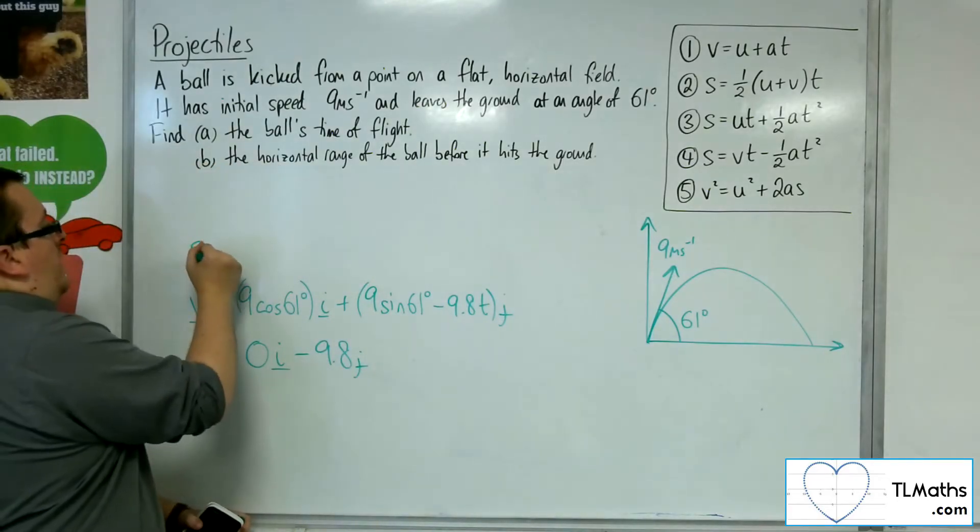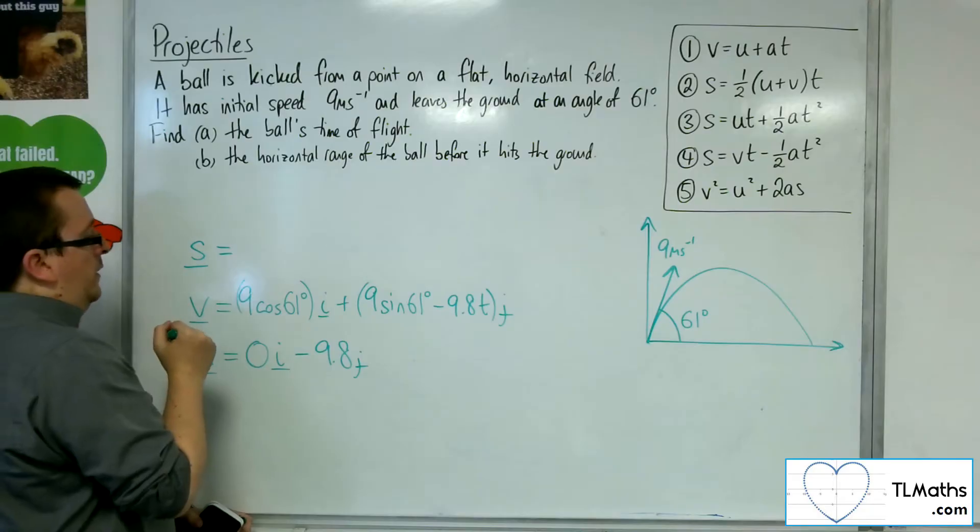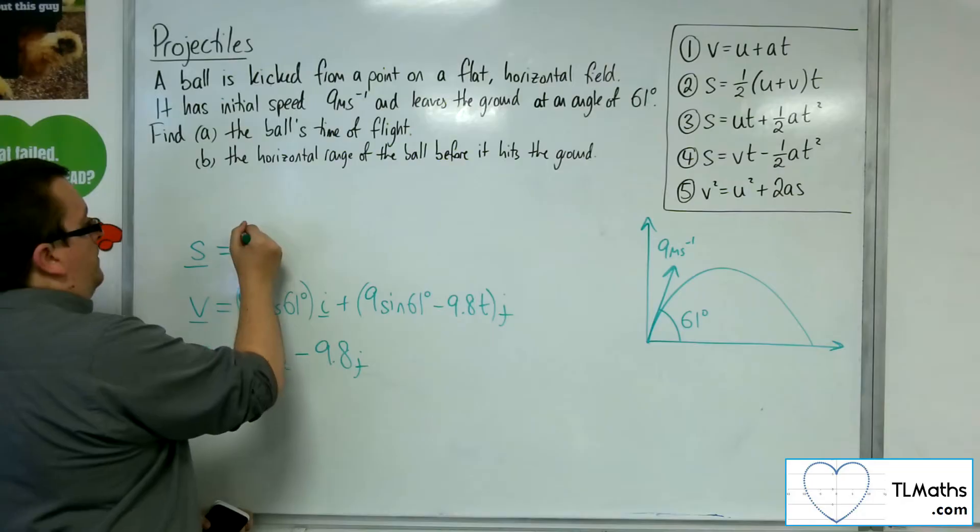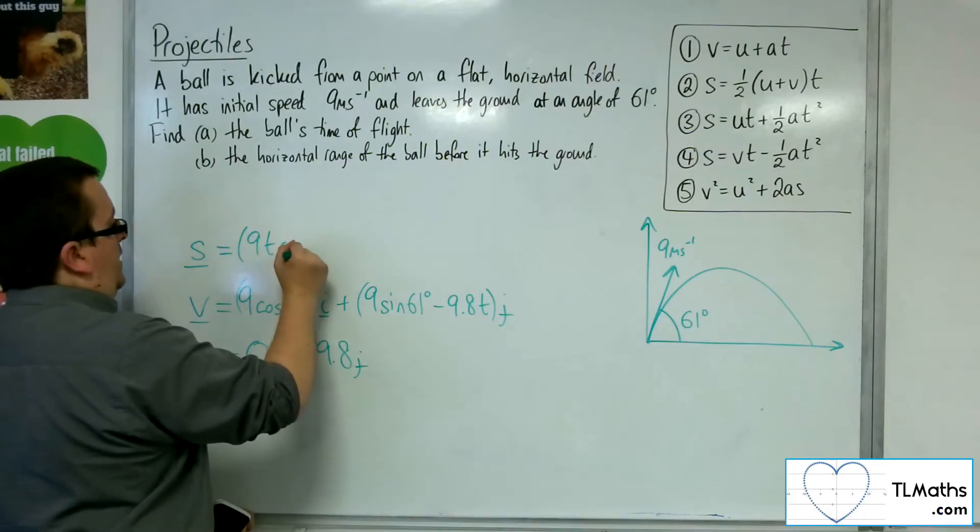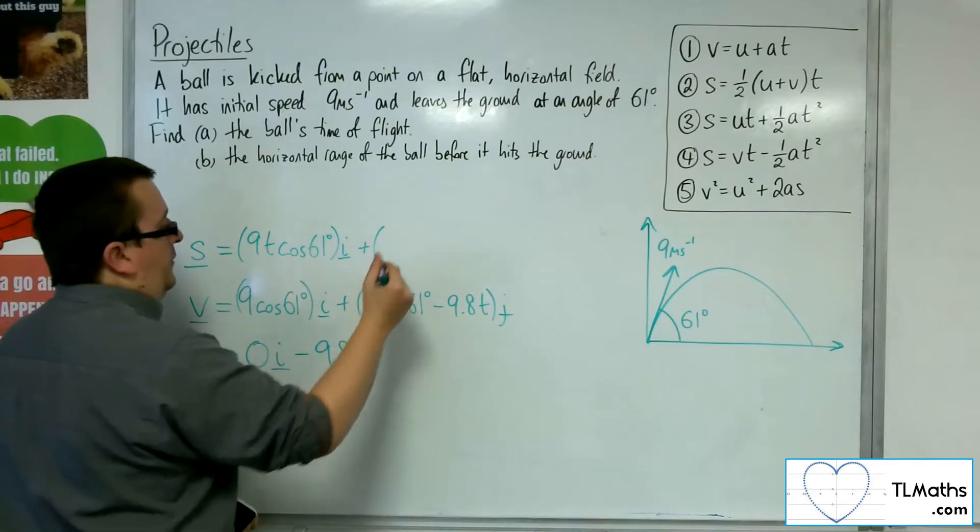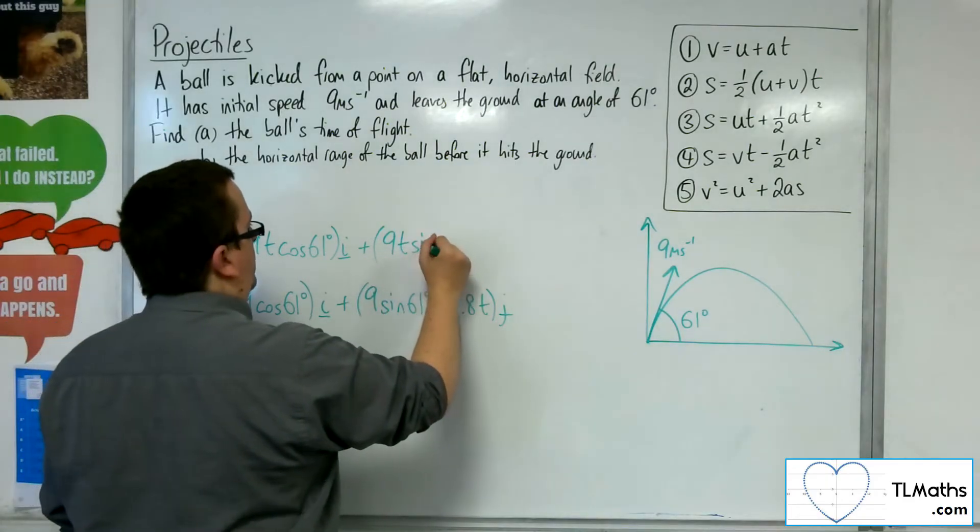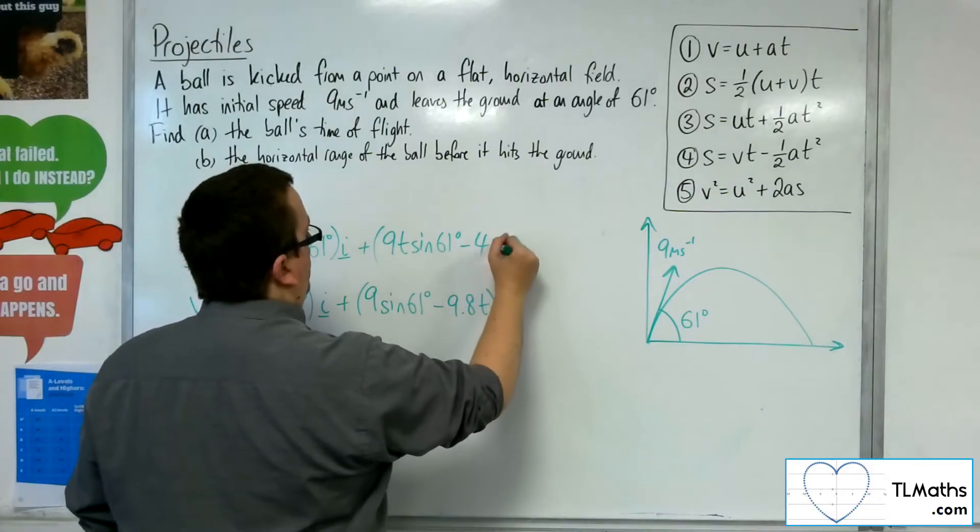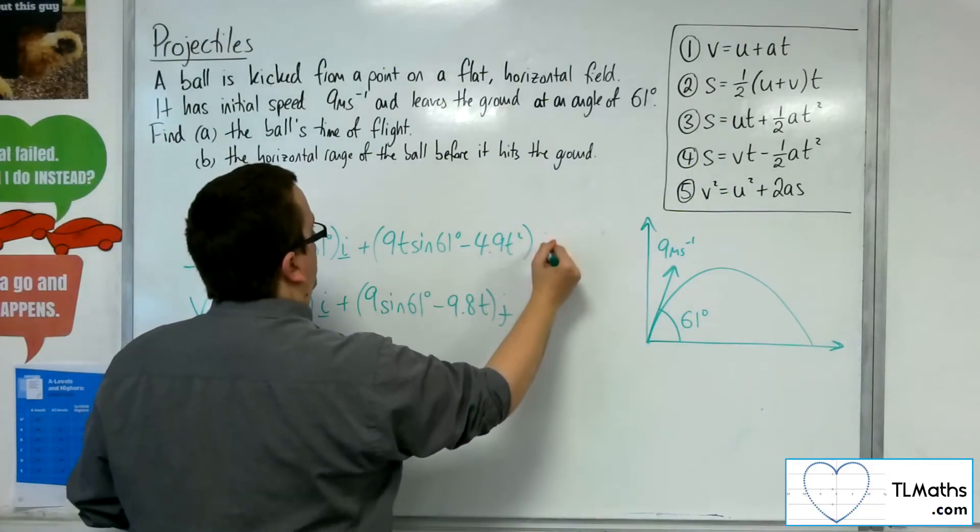Then we integrate again to get s. We're starting at the origin, so the constant of integration will be 0. So I'm just left with 9t cosine 61i plus 9t sine 61, take away, integrating this, 4.9t squared j.